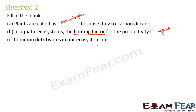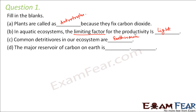Common detritivores in our ecosystem are those organisms which help in fragmentation of the detritus. Detritus is the dead and decaying matter. One such common organism is earthworm, which is also called the farmer's friend. The major reservoir of carbon on earth is oceans, because almost 71 percent of carbon is present there in dissolved form.